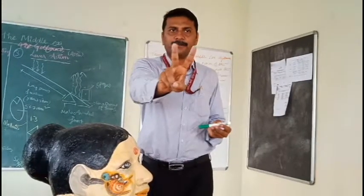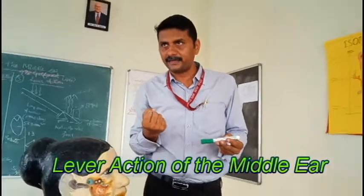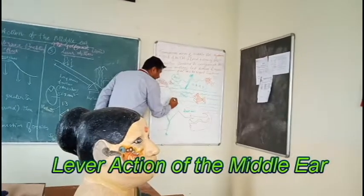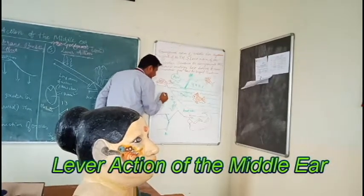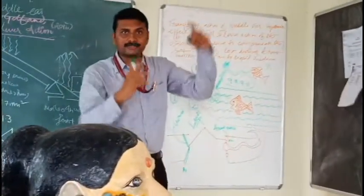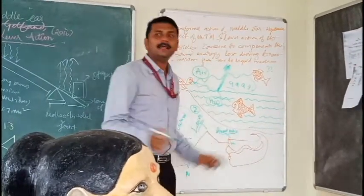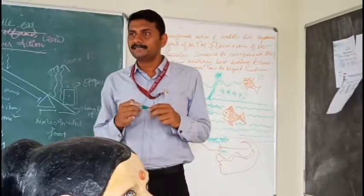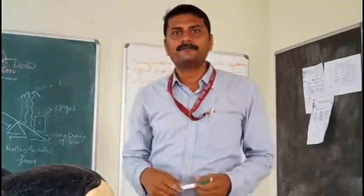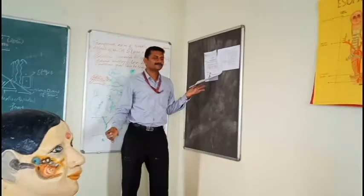The second principle based upon which the middle ear conserves a considerable amount of sound is the lever action. So the first mechanism is the curved membrane, the second mechanism is the lever action of the ossicles, and the third is the areal ratio — the ratio of the surface areas.